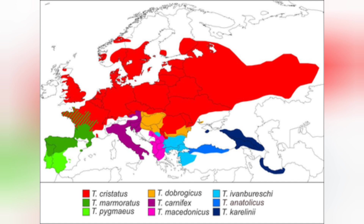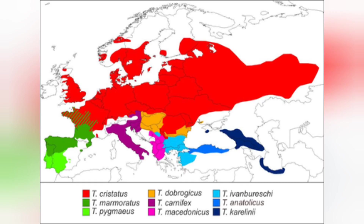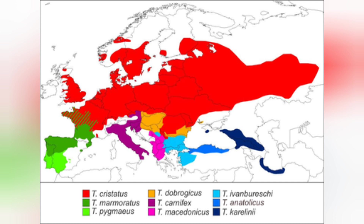Moving to eastern parts of Macedonia, we find a different species — Triturus ivanburesii, the Balkan crested newt — extending from Macedonia through most of Bulgaria, down into northeastern Greece and parts of western Turkey. Triturus ivanburesii is another species that was originally thought to be part of the Triturus karelinii group; it wasn't separated from that group until 2012.